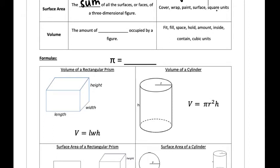If you are going to wrap a present for somebody, the amount of wrapping paper you need to wrap the actual gift is something you would solve surface area for. Whereas the volume of something is the amount of space that is occupied by a figure.